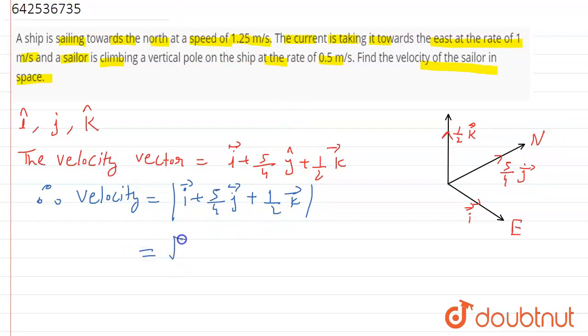Now, when we solve this, we are getting the magnitude as square root of 1 squared plus 5/4 squared plus 1/2 squared. After solving, we get 3√5/4. This is the velocity of the sailor in space. This is our answer. Thank you.